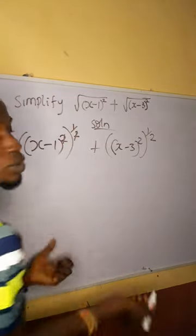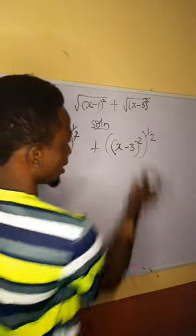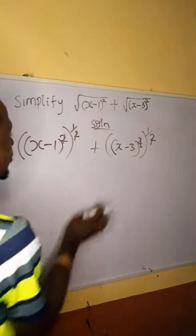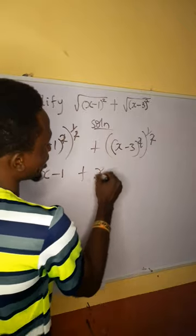Now these two will go and cancel these two. I just have to the power of 1 and anything to the power of 1 will give you back that thing. Same thing will happen here. So if I open up this bracket, all I have left is x minus 1 plus here I have x minus 3.